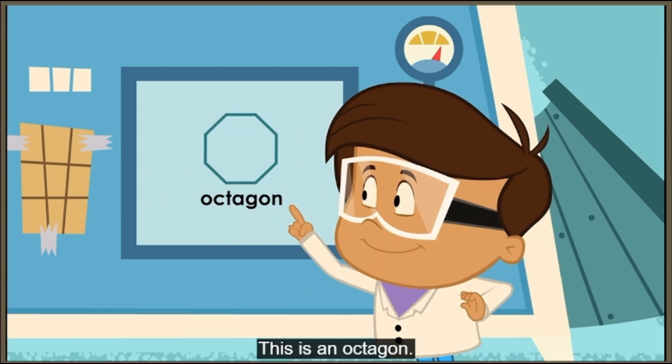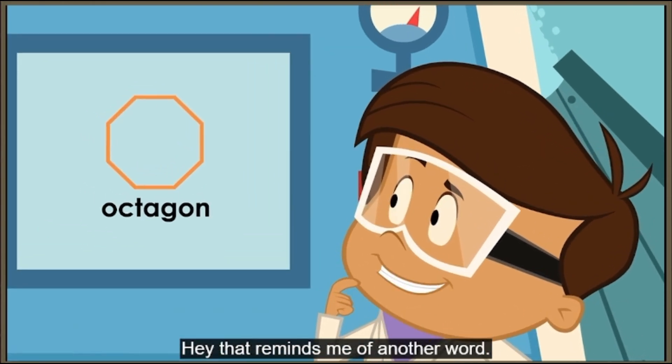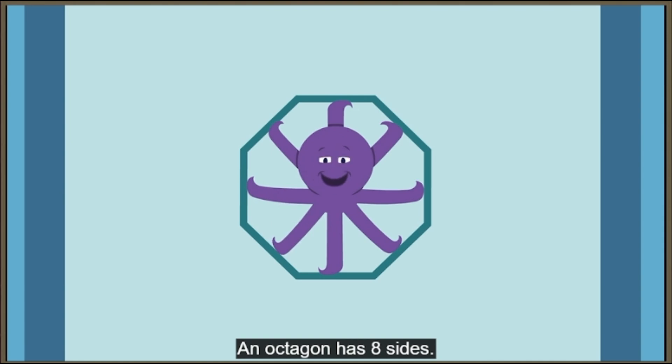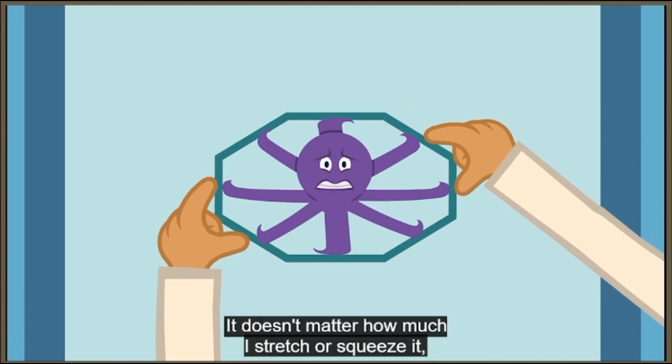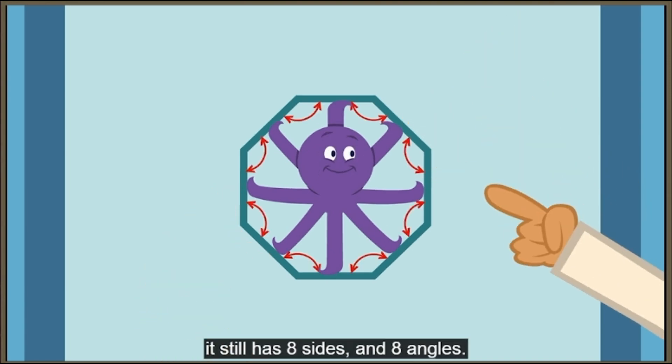This is an octagon. That's a shape with eight straight sides. Hey, that reminds me of another word. Octopus! An octopus has eight legs. An octagon has eight sides. It doesn't matter how much I stretch or squeeze it, it still has eight sides and eight angles.